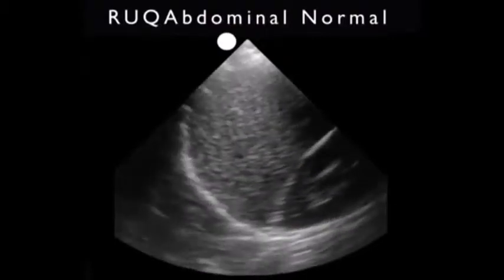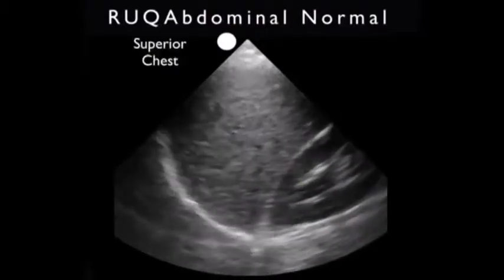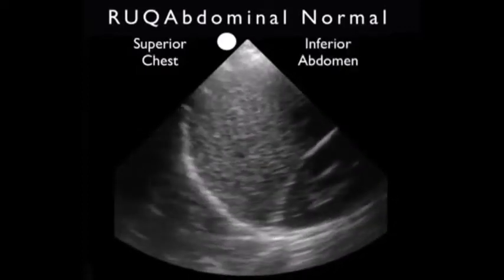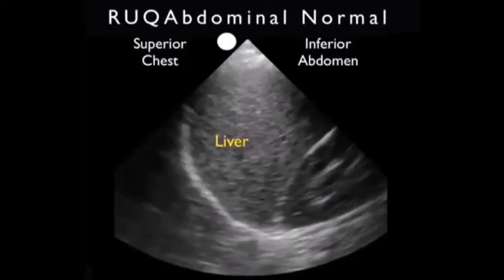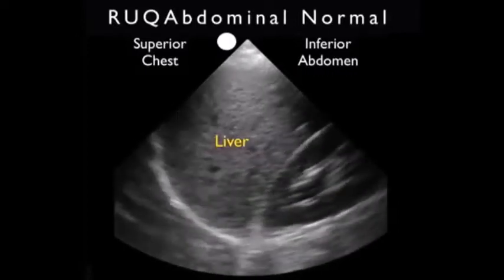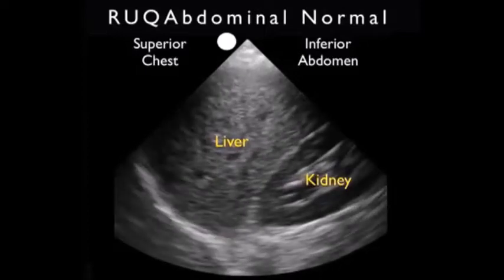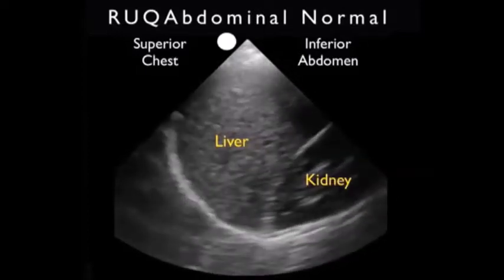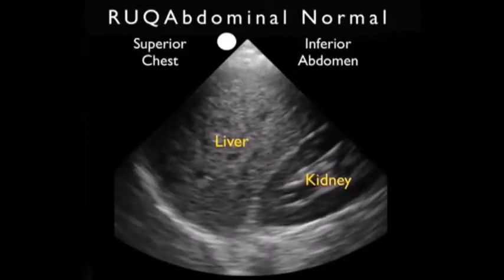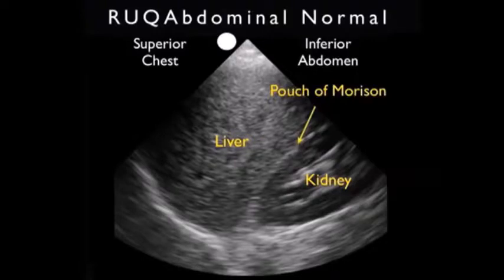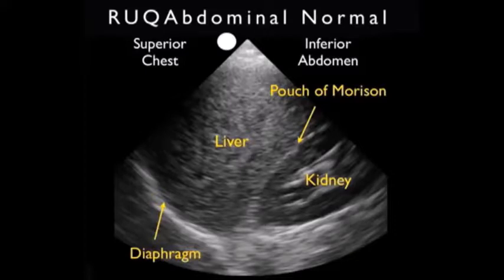Now let's take a look at a normal image you might obtain. Remembering that this is a long axis view, the probe marker is positioned towards the patient's head, so the left of the clip is superior or chest cavity and the right is inferior or abdominal cavity. The first large structure in the middle of the image is the liver, and to the right or inferior to the liver we see the football-shaped kidney. That interface between the liver and kidney represents the potential space known as Morrison's pouch, where we look for dark anechoic fluid collections. A thin white line represents the fat within the capsule around the kidney. To the left of the liver, the white diaphragm represents the interface between chest and abdominal cavities.